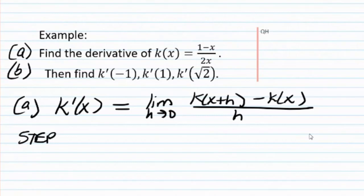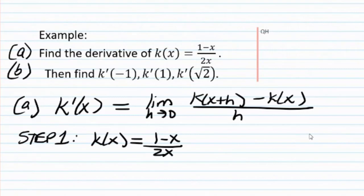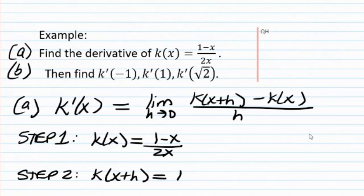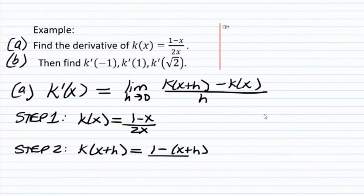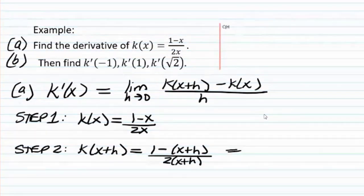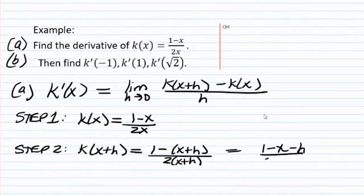So step one, we're going to find k of x — that's always just given to us: 1 minus x over 2x. Step two, we're going to plug x plus h into the function k. So that's going to give us 1 minus x plus h divided by 2 times x plus h, or in other words, 1 minus x minus h over 2 times x plus h.